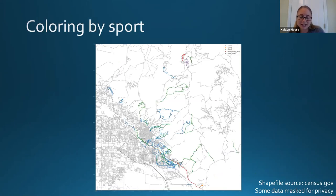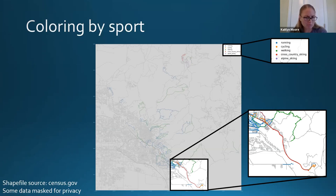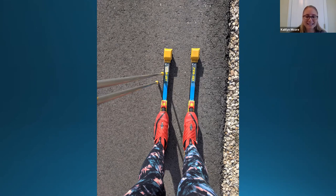Coloring by sport: I was curious about the different ways I recorded sports in different areas. This made sense at first, but then I noticed something interesting — this trace along Highway 21 heading up toward Lucky Peak Reservoir is mostly red, which is cross-country skiing. It seems strange to be cross-country skiing along pavement near a river by a highway. It turns out I was recording roller skiing activities as cross-country skiing, since the physical motion is meant to mimic it — so I was in fact skiing on pavement.